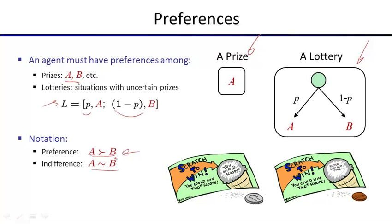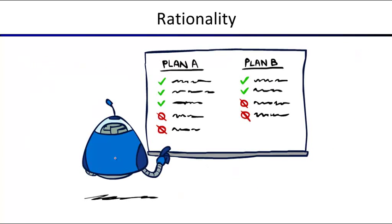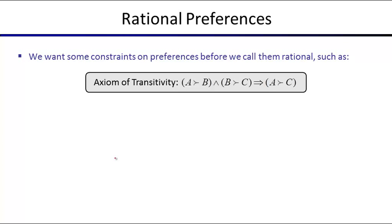Now what is the rational thing to do? We're going to come up with utilities — numbers for every possible outcome. First, what does it mean for these utilities to be rational? Any set of numbers you associate with outcomes is technically a utility function, but we're interested in meaningful ones. We'll call those rational utility functions. Here's the first axiom — transitivity: if you prefer A over B and B over C, you must prefer A over C. It would be weird to have preferences that violate this.